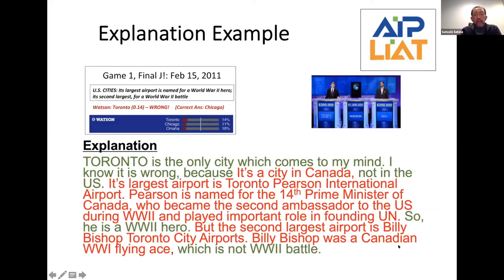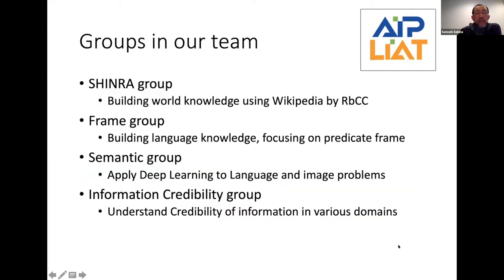So that's our goal — creating these kinds of explanatory sentences for questions. In order to do so, we have a lot of things to do beyond just applying deep learning. Deep learning will be a very good tool, but it's not the only thing we need. Knowledge is important. One of the topics in the team is Shinra, which is to build world knowledge using Wikipedia through collaborative contribution. The frame group is working on building language knowledge, focused on predicate frames. The semantic group is applying deep learning to language and image problems. We are also working on information credibility, since we work with Wikipedia.